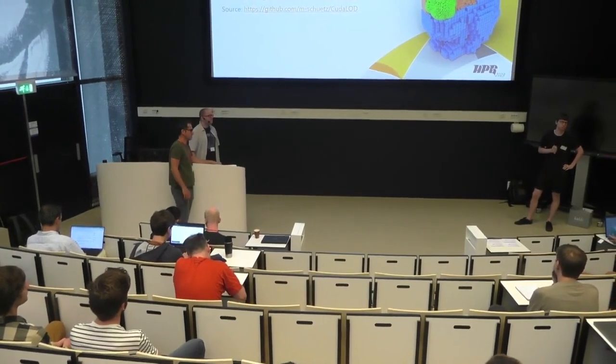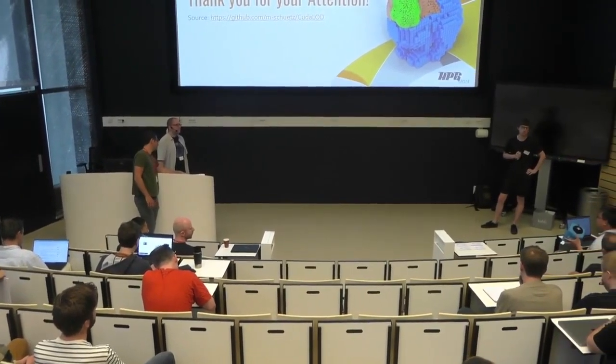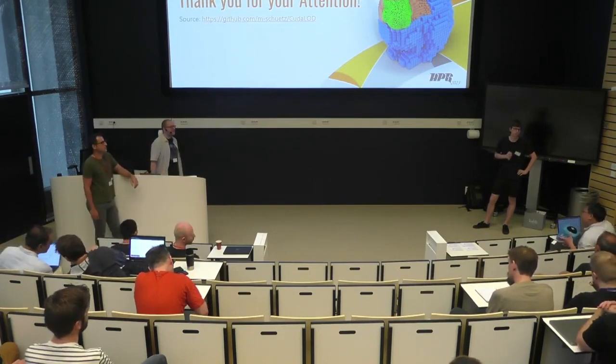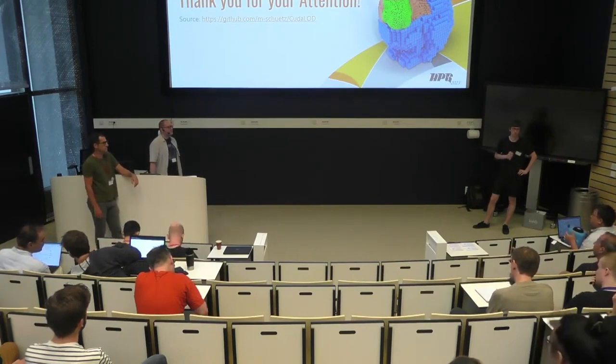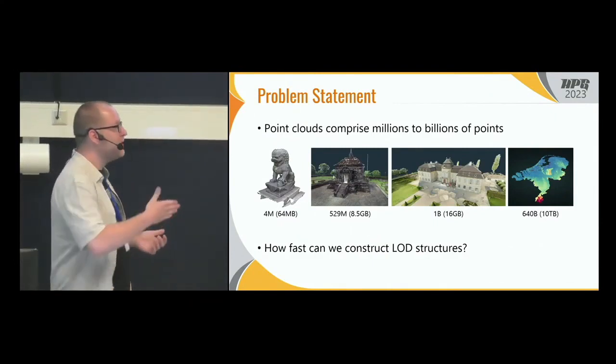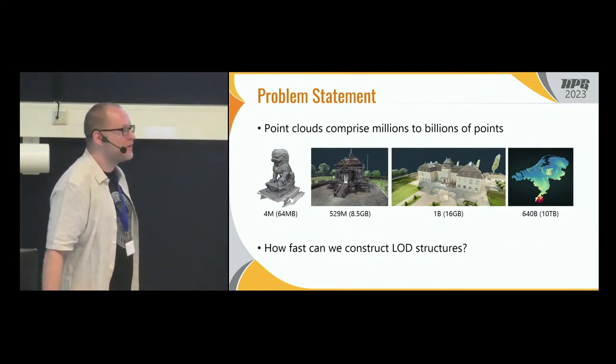Question about the largest testing data size and GPU memory: the largest we've tested, since this is in-core, was one billion points on a GPU with 48 gigabytes. We didn't do anything memory-friendly here. But if you do this in an out-of-core process, we have data sets with 640 billion points — for example the Netherlands dataset shown on the first slide, at about 12 points per square meter. With out-of-core, you'd create chunks, process each chunk on the GPU, write results back to disk, and combine the individual octrees into one large octree.